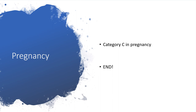In pregnancy, pentamidine belongs to Category C, which means you must weigh the merits and demerits, and monitor the pregnant woman closely. It is not completely contraindicated in pregnancy, but you have to be very careful. With that, I've come to the end of this presentation. Please remember to subscribe, share, and leave comments on my channel.